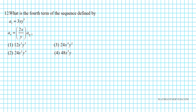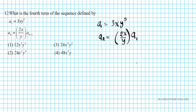We want to find the fourth term. We know the first term is 3xy⁵. So A₂ = (2x/y) × A₁ = (2x/y) × 3xy⁵. Simplifying — one factor of y cancels, leaving 2 × 3 = 6x²y⁴.